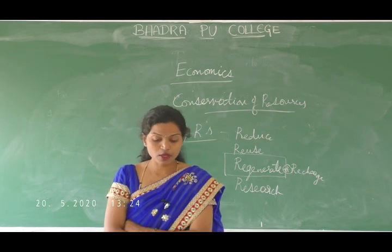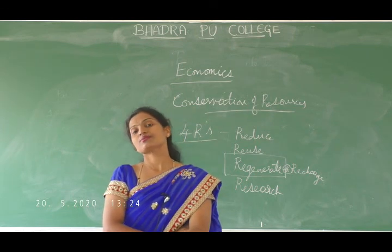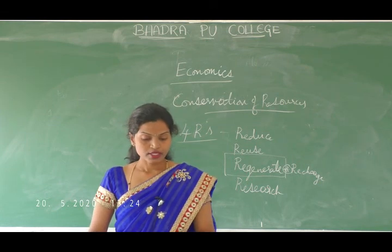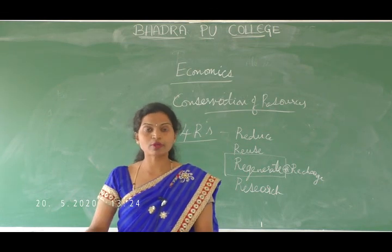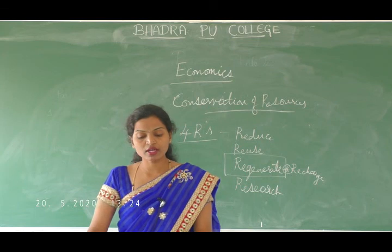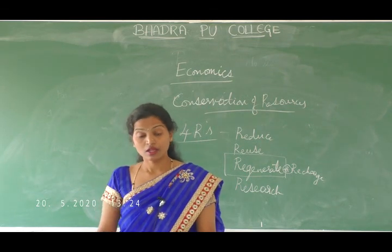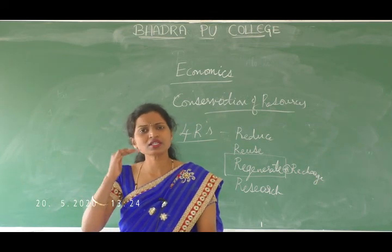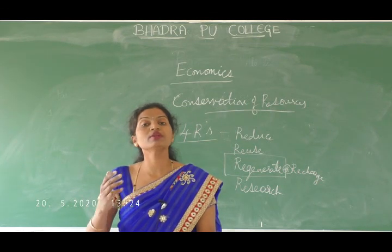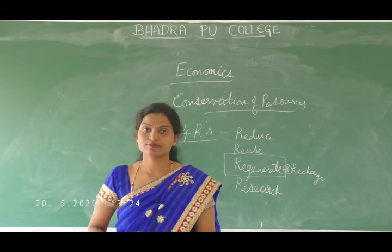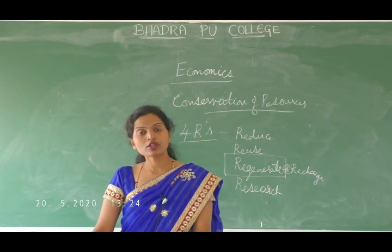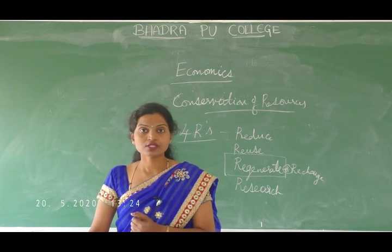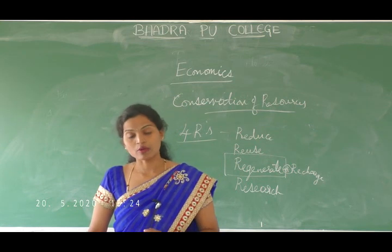Causes of poverty include more population size — that is, rapid increase in population. Also, low level and growth of national income — the national income might be less than the rise in price levels. When there is an increase in the price of goods, people are unable to afford them and cannot purchase even food.